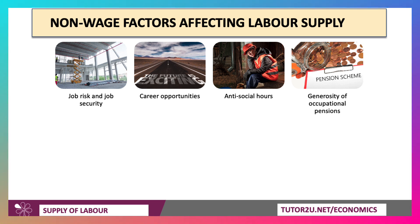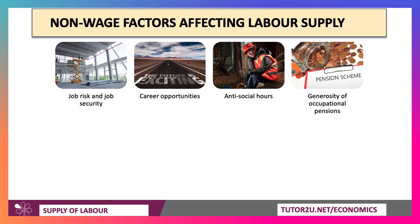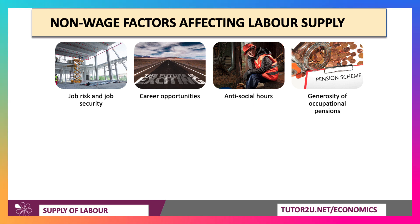Non-wage factors impact the total labour supply available to particular occupations. People will think about which industry they want to work in: what's the extent of job risk and job security? What are the opportunities for career advancement and progression through pay scales? Are you expected to work anti-social hours, and if so, are they paid appropriately? Many people now look at pension schemes — how generous are the pension schemes made available to employees? Many businesses are moving away from final salary pension schemes, and while there is an opt-out now, pensions can be quite expensive to pay into.